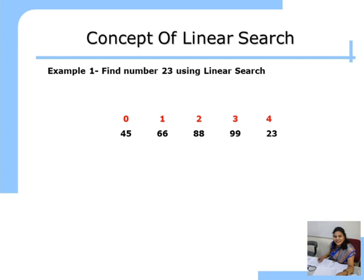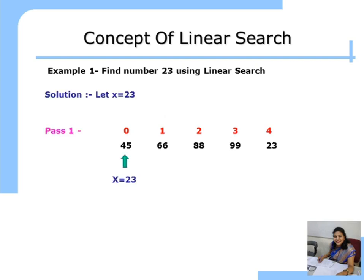Let us understand an example: Find 23 using Linear Search from the following array. An array of size 5 is given with elements 45, 66, 88, 99, and 23. These elements are not sorted — this is an unsorted array. To find 23 linearly, we start comparing from the 0th location to the last location. We first store the value 23 in variable x. In pass 1, we compare x with the 0th location, that is 23 with 45.